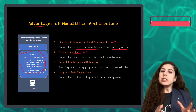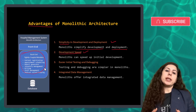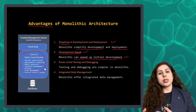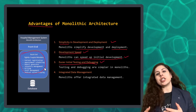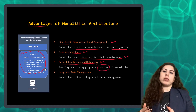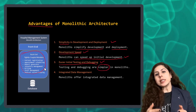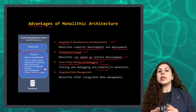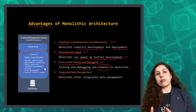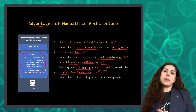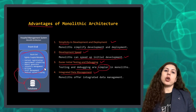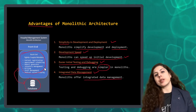Second, deployment speed. Initially, deployment can be faster as developers do not need to deal with the complexities of distributed systems. Third, easier initial testing and debugging. Testing a monolithic can be more straightforward because there is no inter-service communication to consider. Debugging is also easier as developers can trace issues in a single unified environment. Fourth, integrated data management. With a shared database, managing data can be seamless, reducing the complexity of data synchronization across different modules.